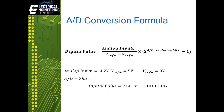The basic formula for A-to-D conversion is: digital value equals analog input multiplied by (2 raised to the ADC resolution bits minus 1), divided by (V-reference-plus minus V-reference-minus). For example, if your analog input is 4.2 volts, supply voltage is 5 volts, ground is 0 volts, and the microcontroller has an 8-bit ADC, then the digital value will be 214, or its equivalent binary value.